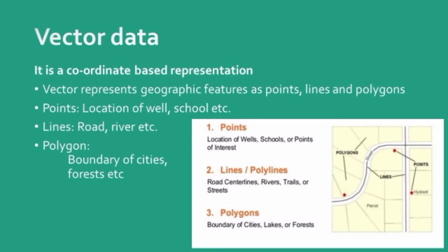For example, if you want to point out a well or a pond, you can just place a point and state that it is a pond or well. If you want to draw a railway line or a canal, you draw a line. These kinds of data on which most maps are made are called vector data.